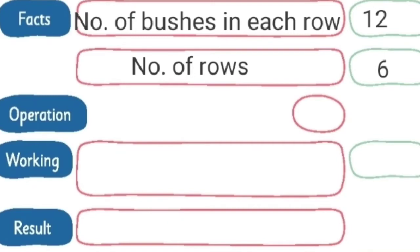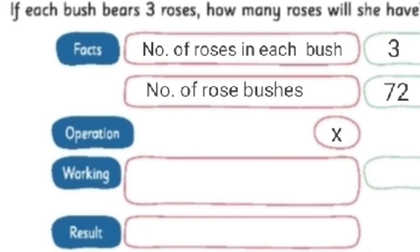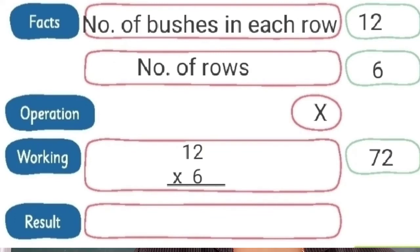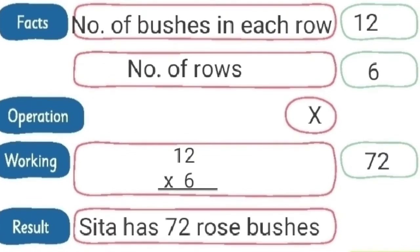We have to write the operation. In one row there are twelve bushes, so in six rows, how many bushes will be there? Yes, we have to do the multiplication. Let's write the working. 12 into 6 — what is 12 into 6? Yes, we will get 72. So the result is: Sita has 72 rose bushes.